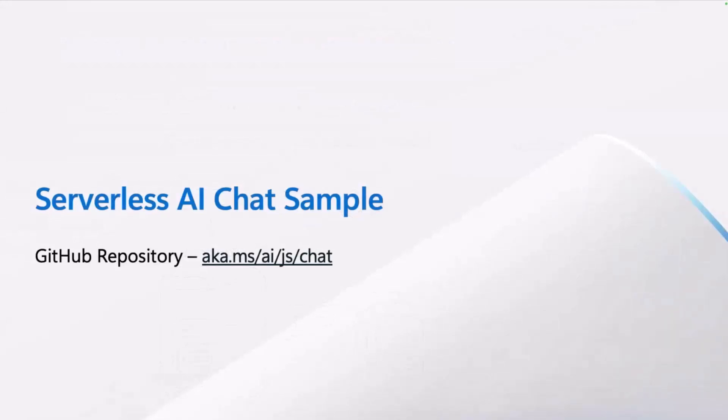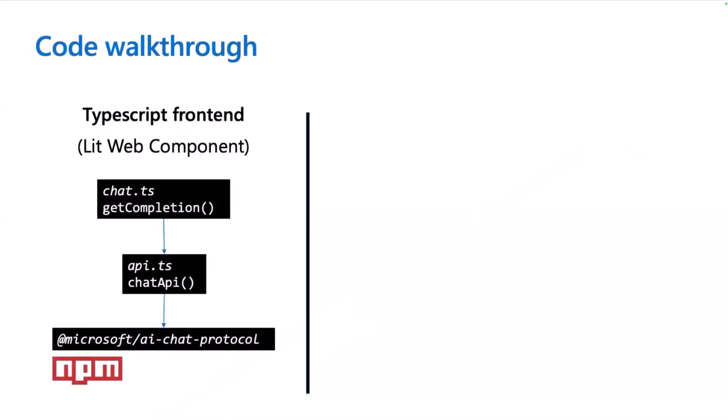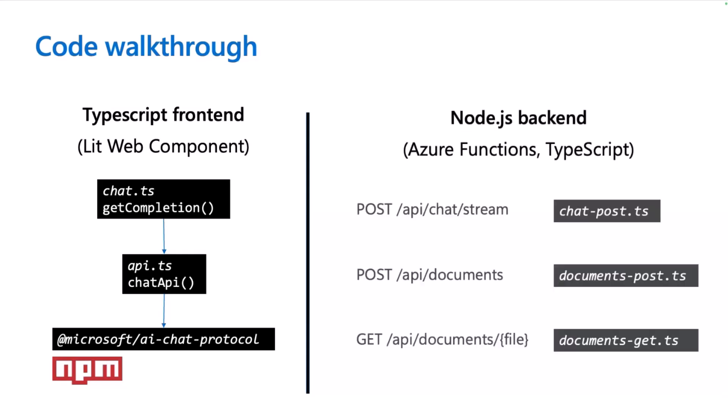Let's have a quick look at the code to see how it works and how we can tweak it. For the frontend, it's all one web component located in the chat.ts file. The client part calls the backend using the getCompletion method, and everything is implemented in the NPM package called the Microsoft AI Chat Protocol. We're using an API specification implemented in this sample, but also in other samples in many other languages like Python, C#, or Java — so you could reuse this frontend with any of our samples using the same AI Chat Protocol. For the backend, we're using Node.js and Azure Functions, and we have three functions.